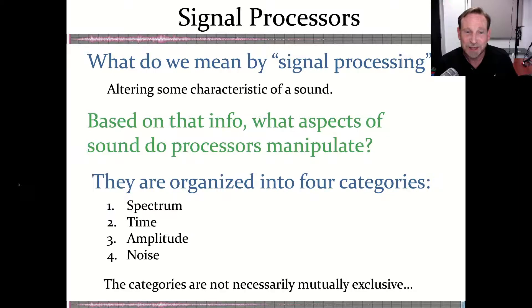So here are the categories: spectrum, which relates to the frequencies, the frequency spectrum, amplitude, time, and noise. And if we put it in this order of spectrum, time, amplitude, and noise, it spells out STAN. And there are quite a few students who have used that as a little device to remember the four categories. STAN: spectrum, time, amplitude, and noise. So maybe that will work for you.